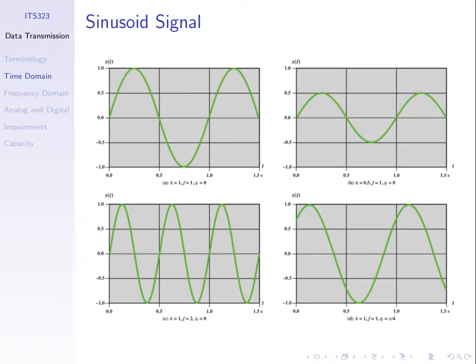The last plot illustrates the impact of phase. Amplitude one, frequency one, phase offset of π/4. Phase is a measure of angle, measured in radians. π/4 radians is 45 degrees. You can see the impact on the waveform compared to the top left — it shifts it along. We don't start at zero; we start at about 0.7 with this phase offset. It offsets the original sine wave in time.